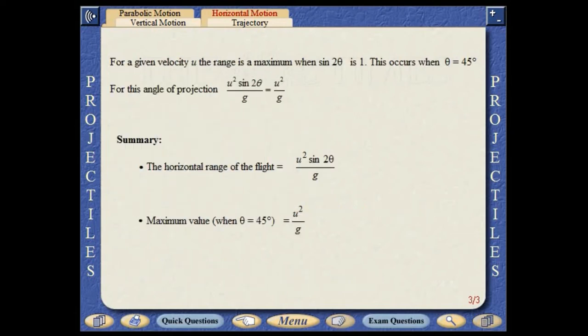For a given velocity, the range is found to be a maximum when the angle of projection is 45 degrees above the horizontal.